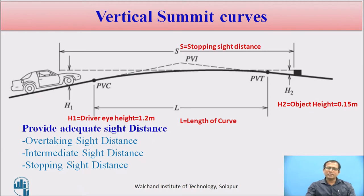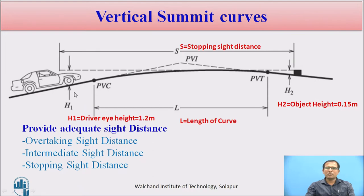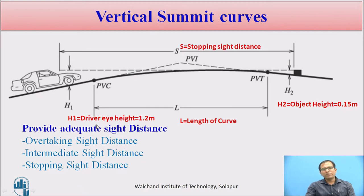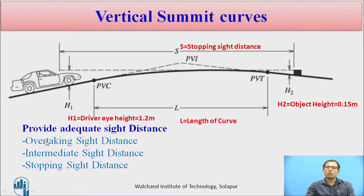The main criteria for designing the vertical curve is to provide sight distance — classified as stopping, intermediate, and overtaking sight distance. Minimum stopping sight distance uses a driver eye height of 1.2 m and object height of 0.15 m. If more land is available, a flatter curve with intermediate or overtaking sight distance can be provided, giving higher safety.